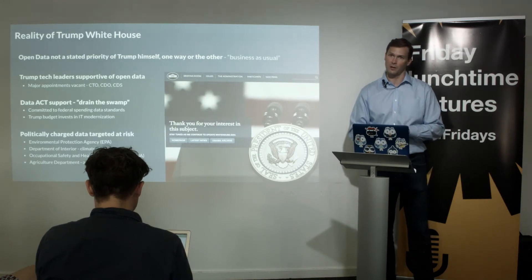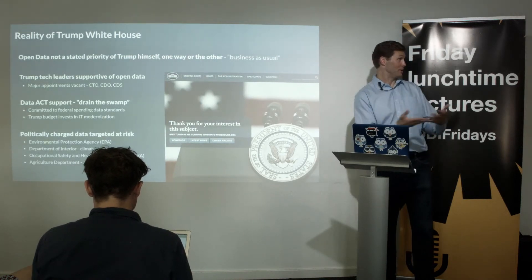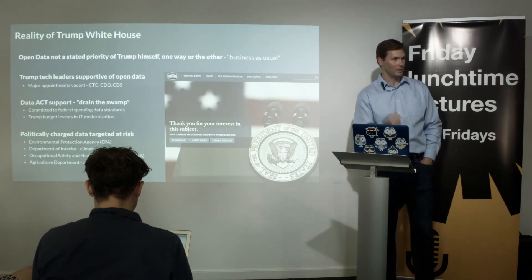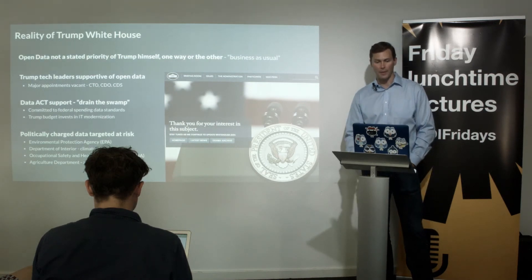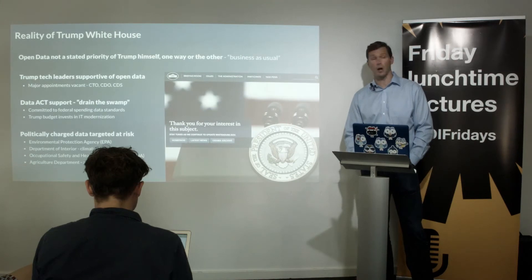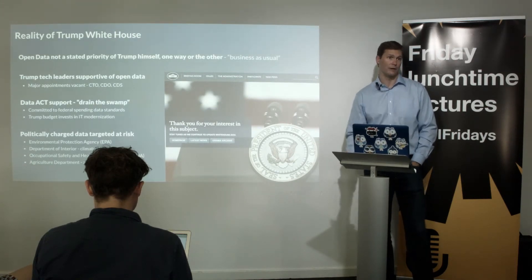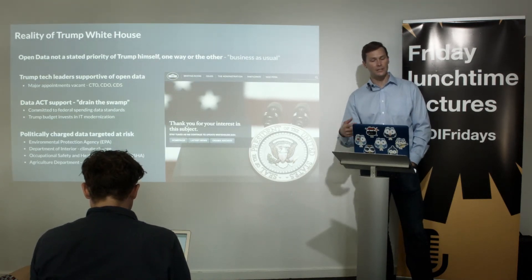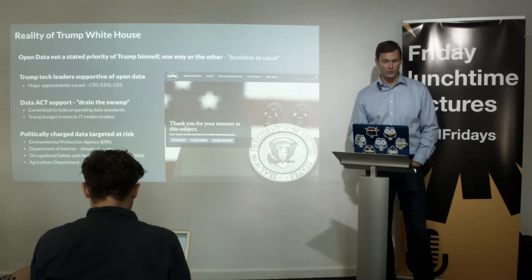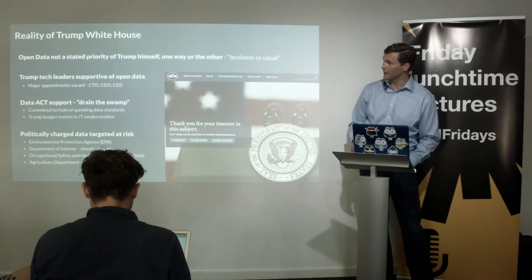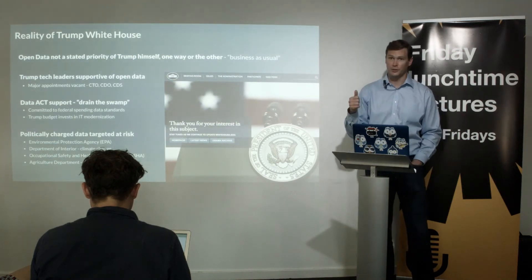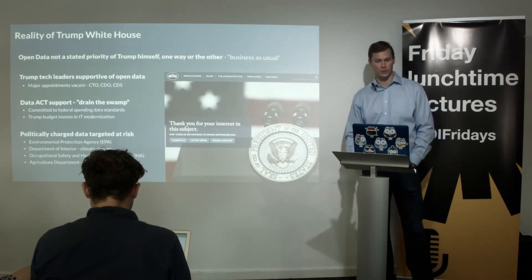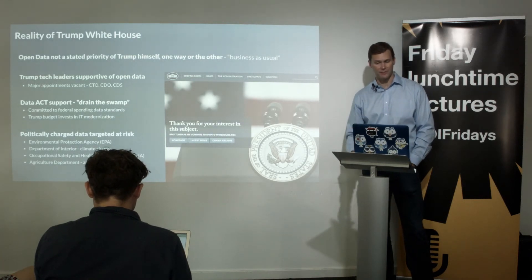The Trump administration talks a little less about transparency and democracy, but a lot about government inefficiency. One of Trump's campaign mantras was 'drain the swamp' — Washington DC, sometimes called a swamp disparagingly, referring to its embedded political culture. The idea: let's be more efficient through data and transparency. Trump is investing heavily in IT modernization, viewing technological backwardness as the key question around government efficiency.